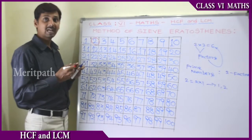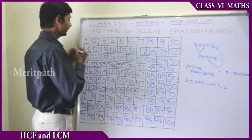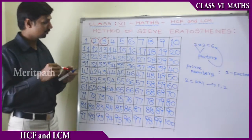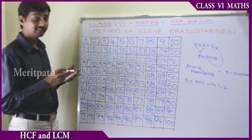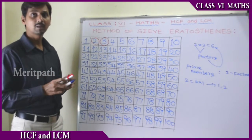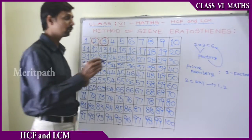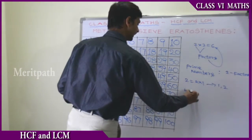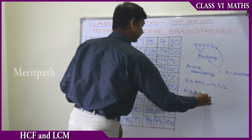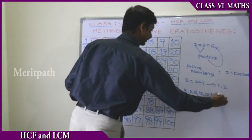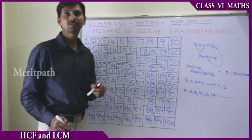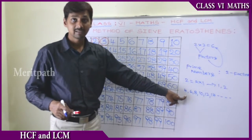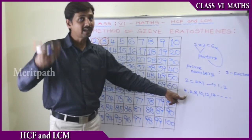Here 3 is also a prime number. So here we have 2 and 3. Let's see the multiples of 2. We know the multiples of 2, that is 4, 6, 8, 10, 12, 14 and so on. These are the multiples of 2. And multiples of 2 means the number has more than 2 factors.